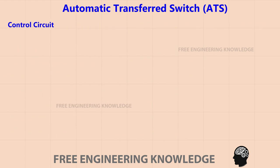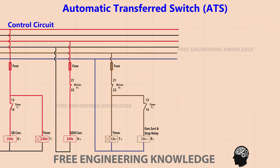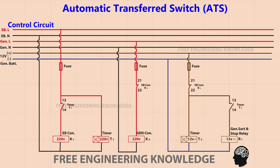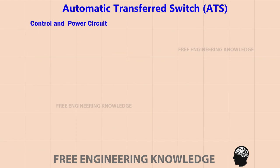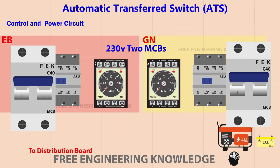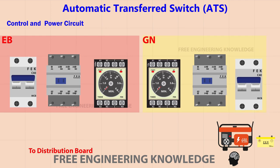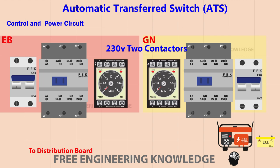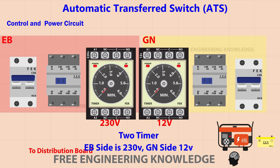Let's look at the control circuit diagram of the automatic transfer switch. Two timer relays are used in this — we'll see why in the next section. The necessary electrical equipment includes: two 230-volt MCBs (amperage adjustable to your usage), two 230-volt contactor relays, and two timer relays — one 230-volt for the EB side and one 12-volt for the generator side.